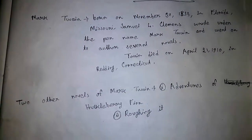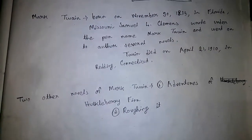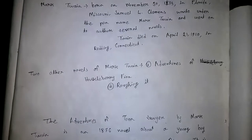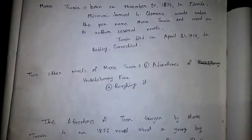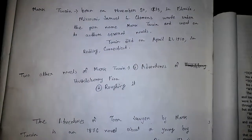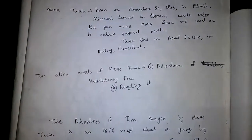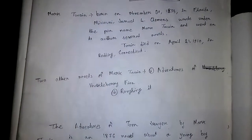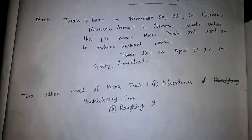Two other novels by Mark Twain are: number one, Adventures of Huckleberry Finn, and number two, Roughing It.